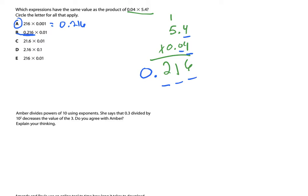Next: 21 and 6 tenths times 100. When I multiply by 100, I take 21.6 and move my decimal place two places to the right because I multiplied by 100 — so I go one, two — and that gives me 2,160, which is 216 thousandths. That is correct.